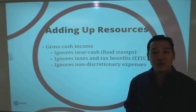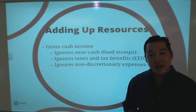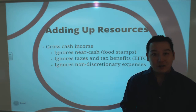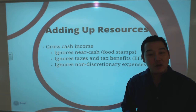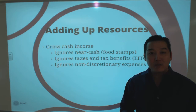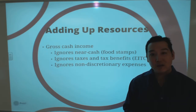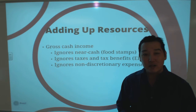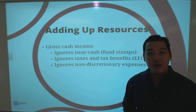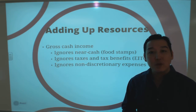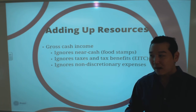In terms of resources, the Census Bureau counts gross cash income — pre-tax, pre-transfer income. SNAP benefits, EITC benefits, taxes paid, and transfers are not counted. Non-discretionary expenses such as child support payments and alimony are also not counted when the Census Bureau estimates poverty.